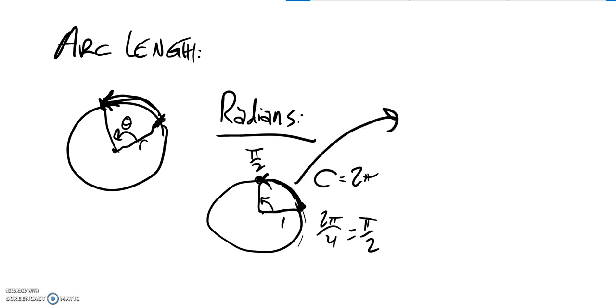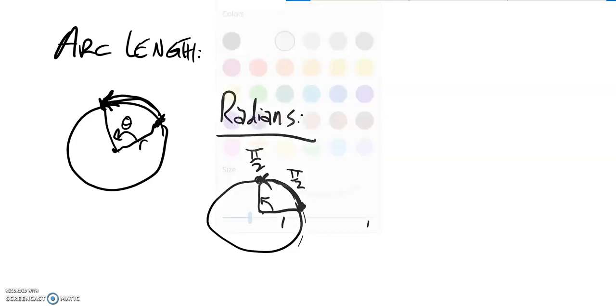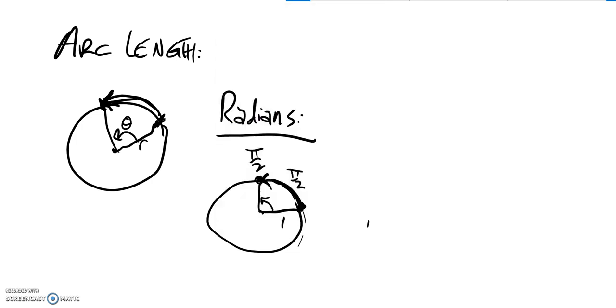So what I want you to notice is, let's say I just blow this up. In other words, I'm still going to do that pi over 2 length, or rotation, pi over 2. But instead of a radius of 1, I'm going to make it a radius of 5.